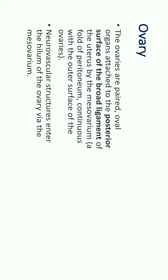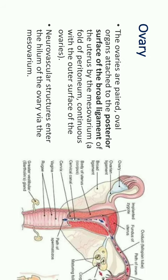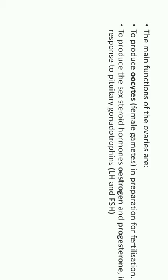What is the ovary? Ovaries are paired organs, oval in shape, and attached to the posterior surface of the broad ligament of uterus by the meso-ovarian. Meso-ovarian is a fold of peritoneum which is continuous with the outer surface of the ovary. The neurovascular structure enters the hilum of the ovary. The main functions of ovaries are to produce oocytes and to produce the sex hormones estrogen and progesterone.